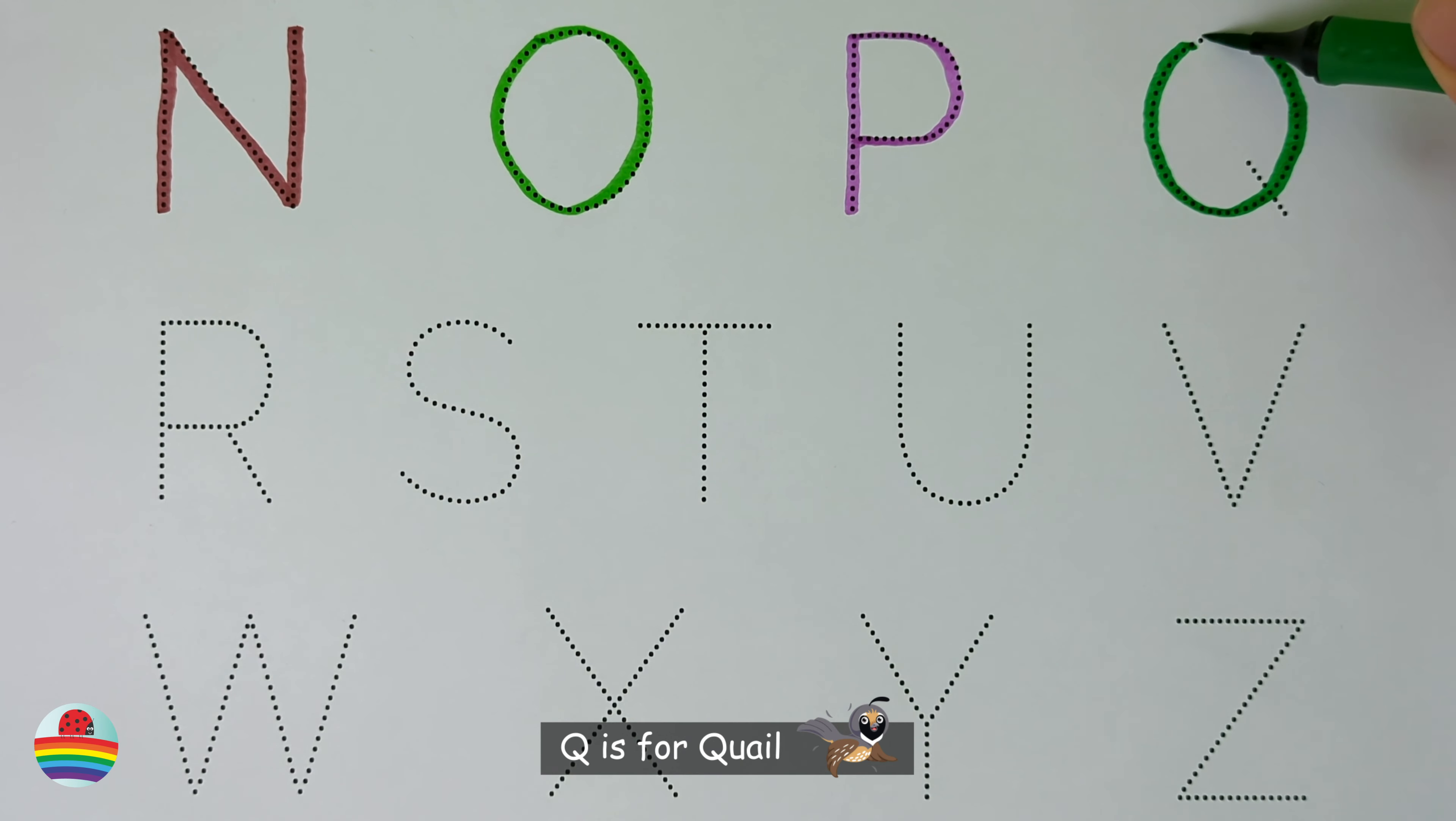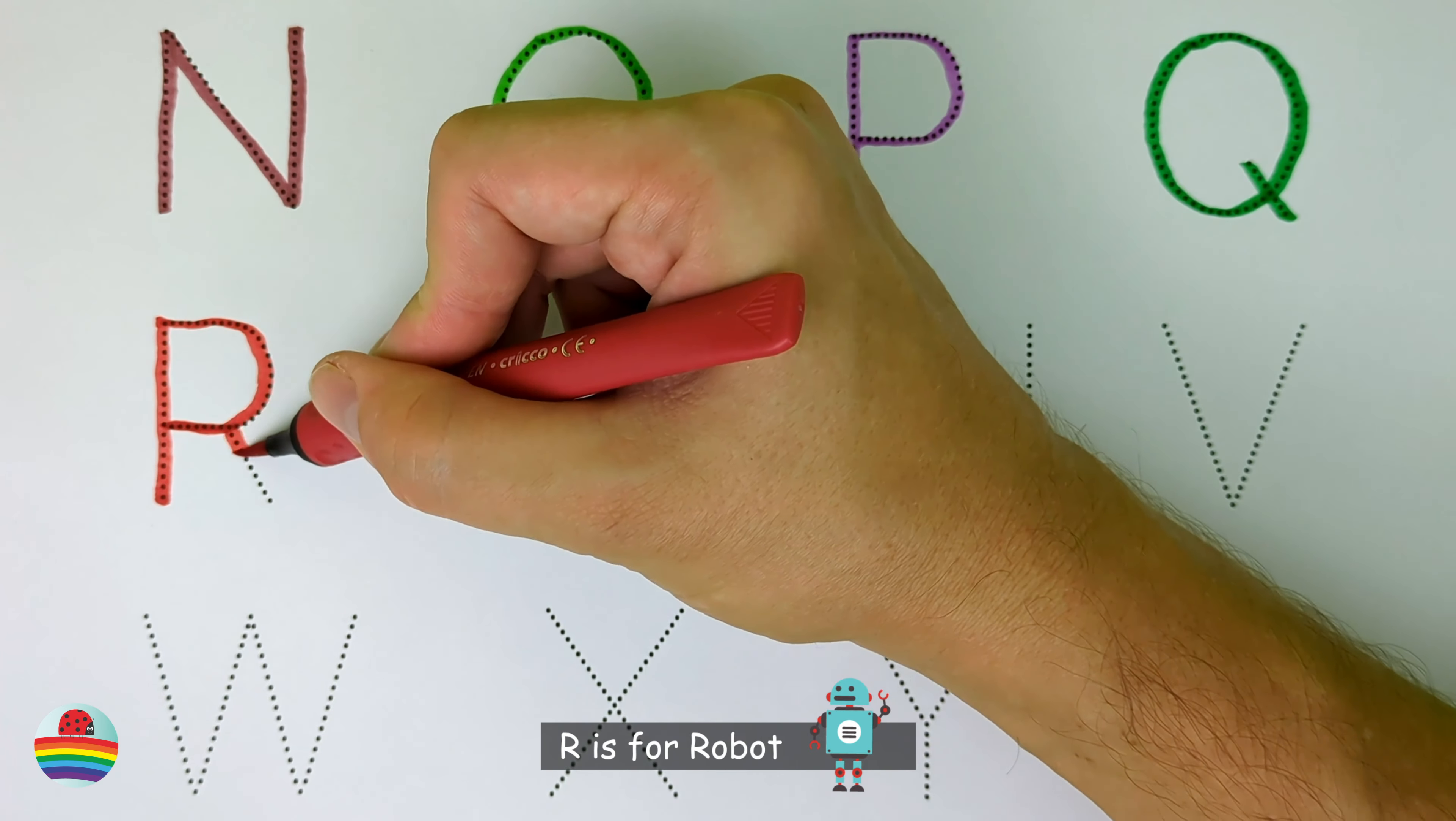Q. Q is for Quail. Q. R. R is for Robot. R.